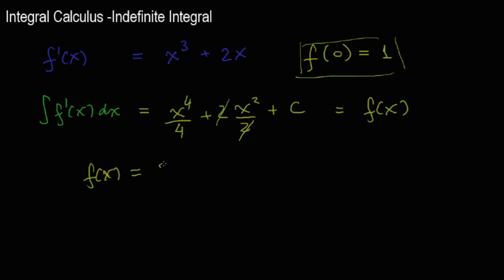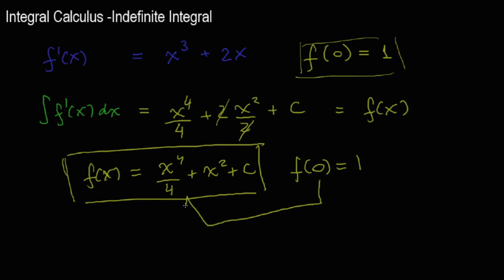At last, my function is calculated to be this. Now, we also know that f of 0 is 1. So if f of 0 is 1, we can find c. We just put those values in our original function. Let's do it now. What would be f of 0 using the antiderivative that we have calculated?